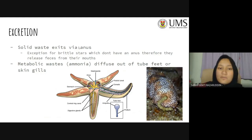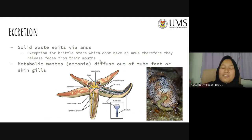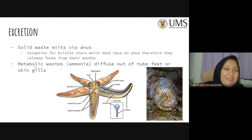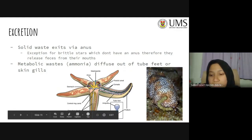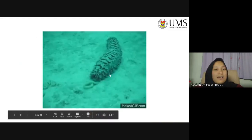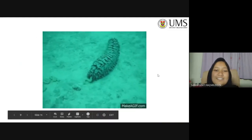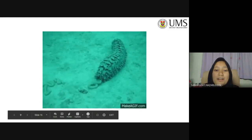For excretion: solid waste exits via the anus, with the exception of brittle stars, which don't have an anus and therefore release feces from their mouth. Metabolic waste such as ammonia diffuses out through tube feet or skin gills. Here you can see a starfish's anus, and a sea cucumber in the process of excreting.